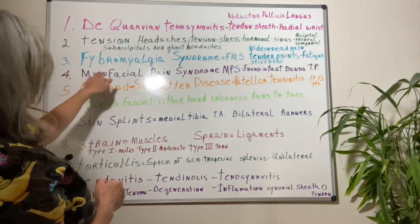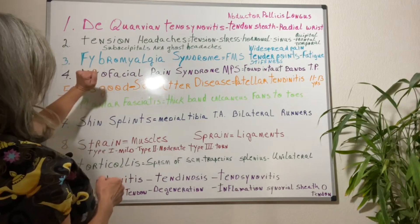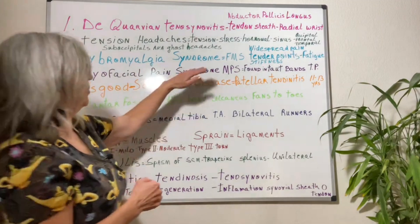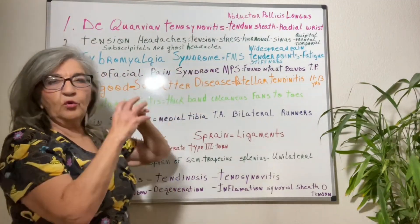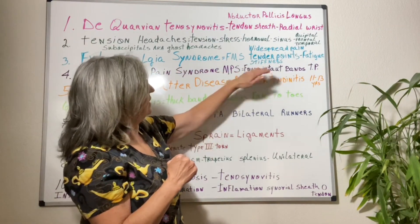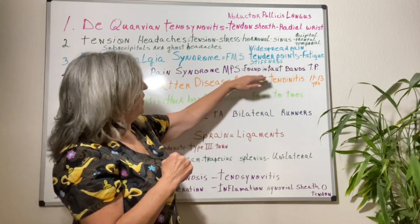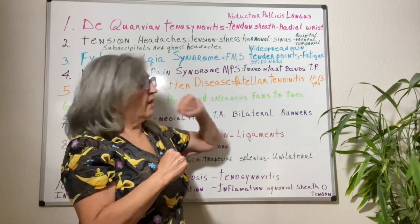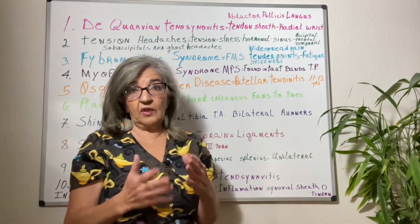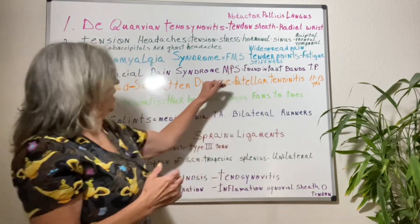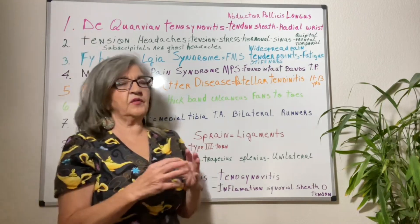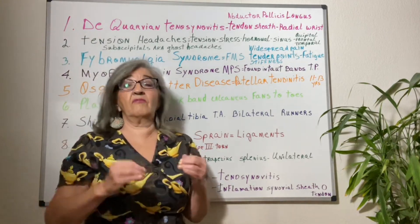Next is fibromyalgia — 'fibro' meaning fiber, 'myo' meaning muscle, and 'alge' meaning pain — syndrome. It's a group of symptoms causing widespread pain. Clients have tender spots, get very fatigued, and experience stiffness. You really have to take your client into consideration. Fibromyalgia and myofascial pain syndrome are similar, and I've found that every client is different every time they come in.